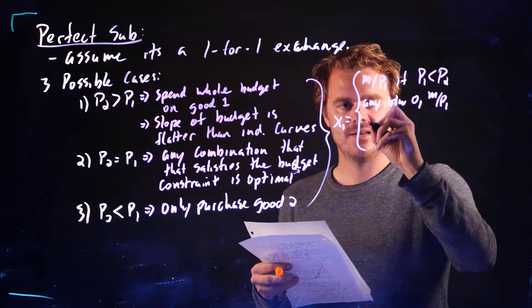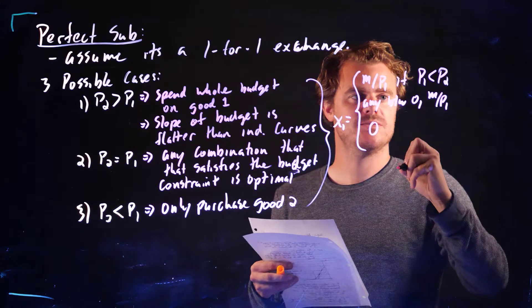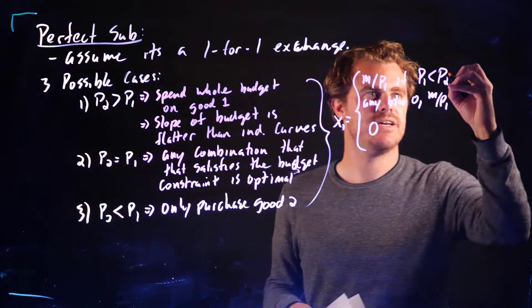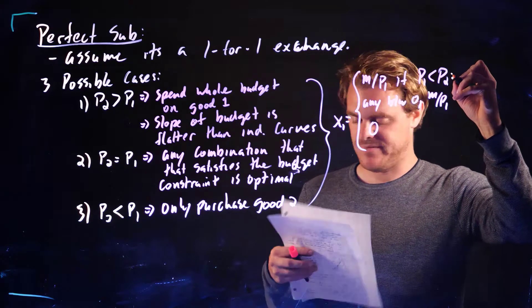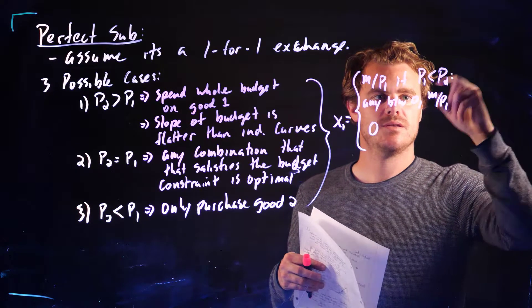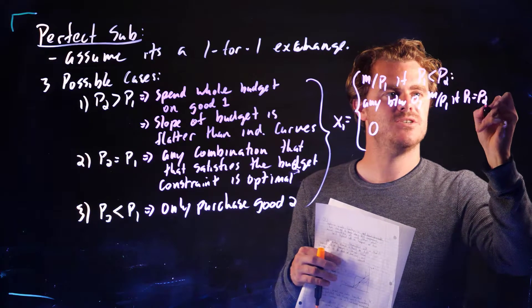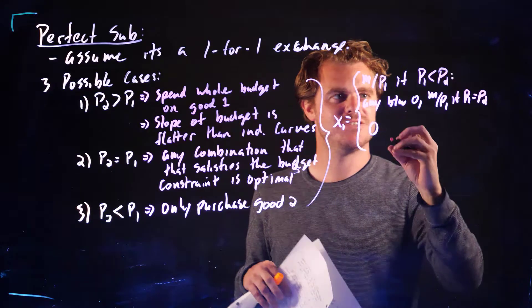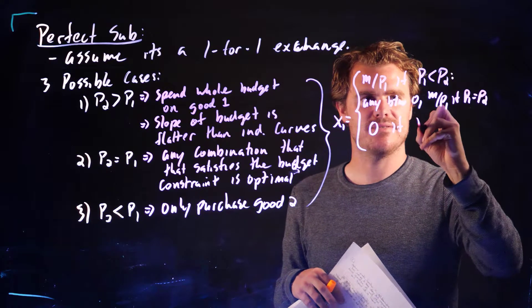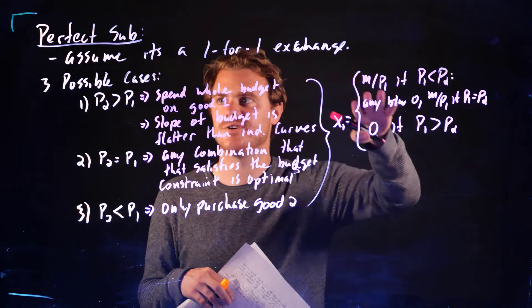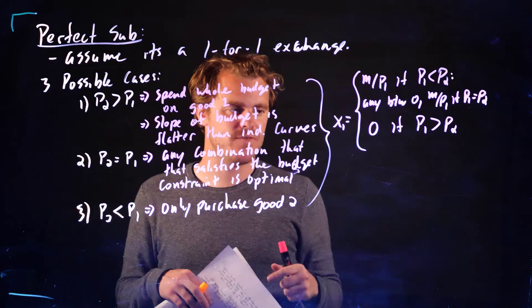So if P1 is less than P2, we're going to spend our entire budget on good 1. This middle case here could be any combination between zero and M over P1. And finally, zero in the last case. This is if P1 equals P2. And this last one is if P1 is greater than P2.